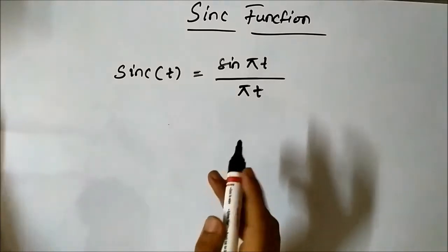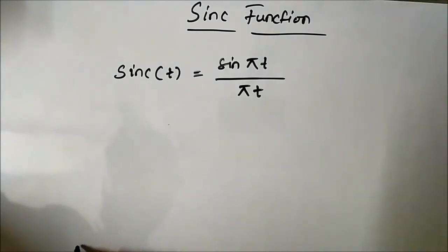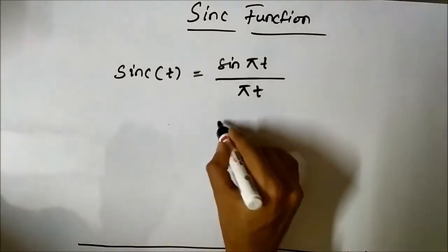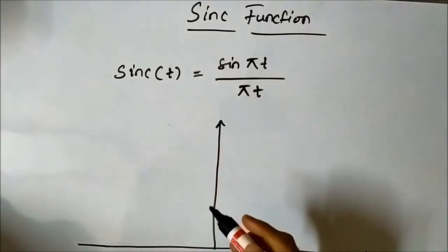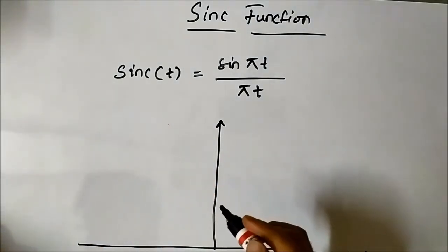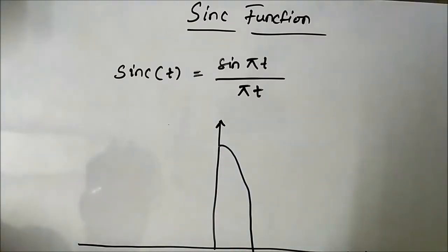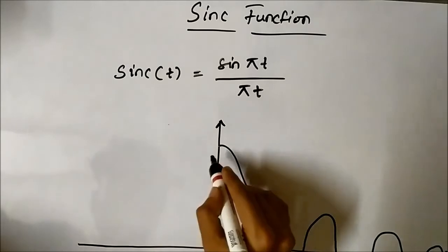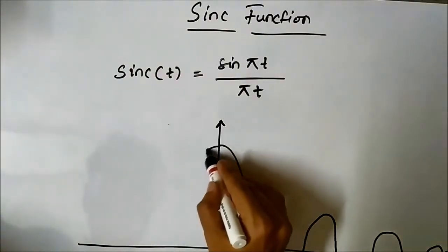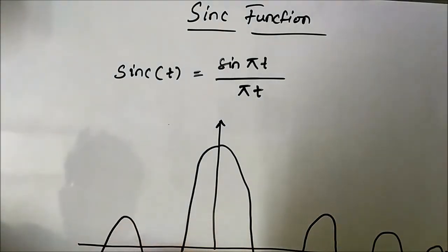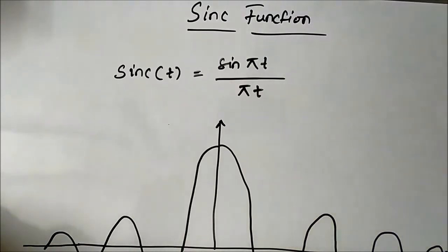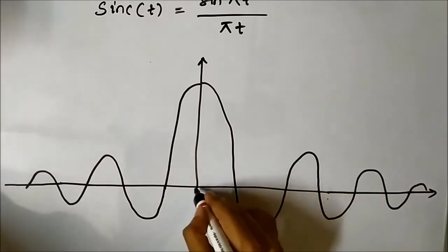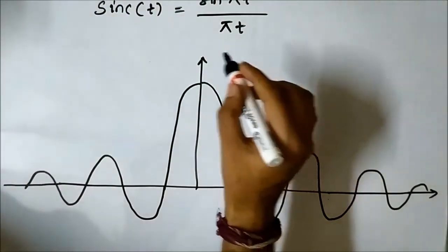Now let us see how the sinc function actually looks like. This is the time axis and this is the amplitude axis. The sinc function actually looks like this. If we further extend the time axis, it is exactly symmetric on both sides. This is the waveform of the sinc function.